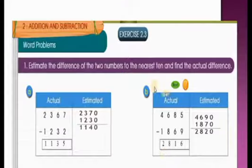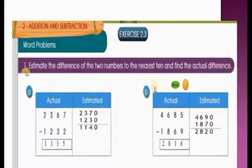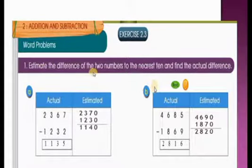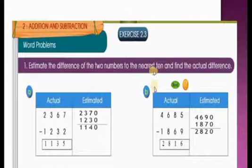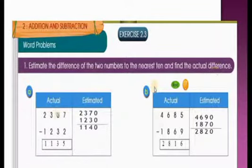OK children, let us solve some problems. Exercise 2.3 Word Problems: Estimate the difference of 2 numbers to the nearest 10 and find the actual difference. So to estimate to the nearest 10, we look at the 1s and 10s place and find the nearest number.